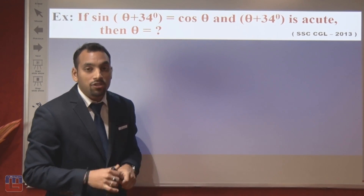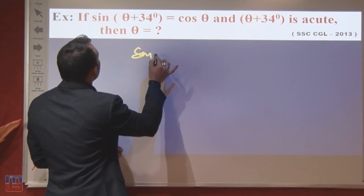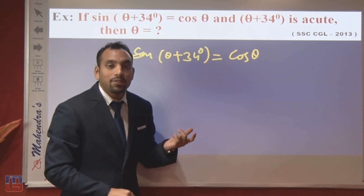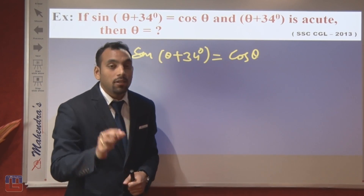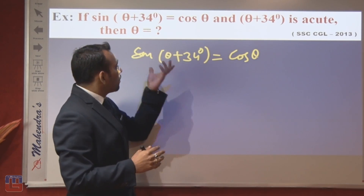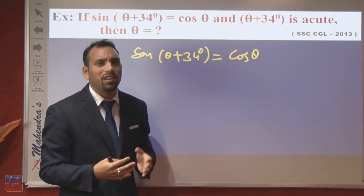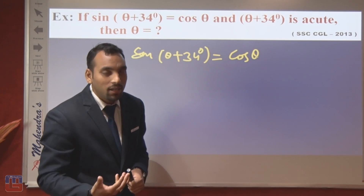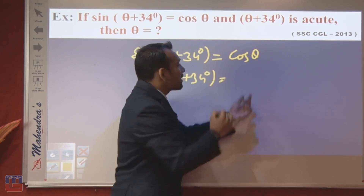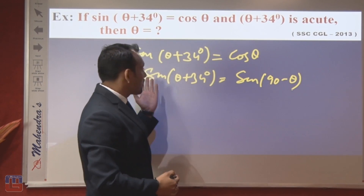Let us discuss a question from the examination (2013): given sin(θ + 34°) = cos θ, find the value of θ. Most students find this difficult. If you have the quadrant concept, it becomes easy. We rewrite cos θ as sin(90° − θ), so that both sides are in terms of sine and can be compared directly.